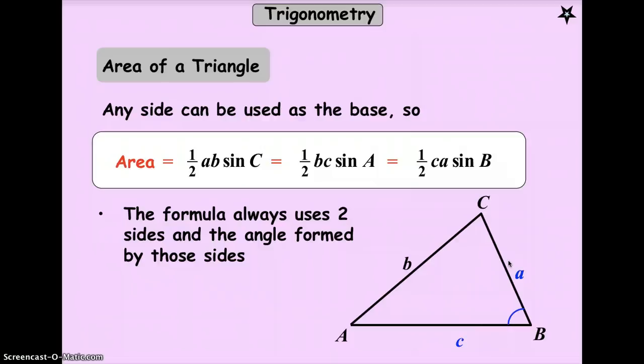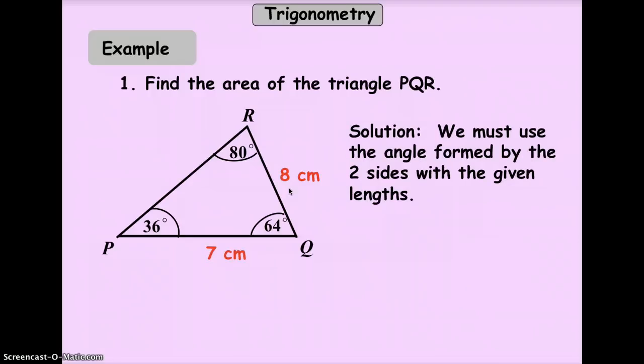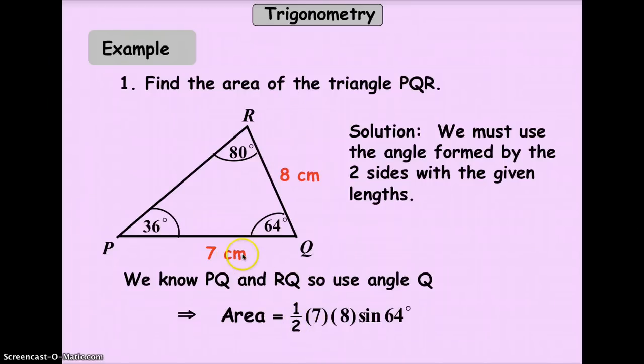Let's have some few examples. Example one, find the area of the triangle PQR. You're given so many information, but you don't need all of them. You only need the two sides and its included angle. Which angle is the included one? It should be the angle between the given two sides. If that's the case, we know PQ and QR, so use angle Q. So, area is equal to one half times seven times eight times sine 64 degrees. So, it's the angle in the middle. Use your calculator now. You can do 0.5 times seven times eight times sine 64. Using three significant figures, you should have gotten, in your calculator, 25.2 square centimeters.